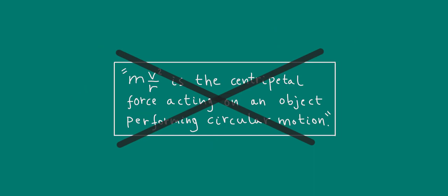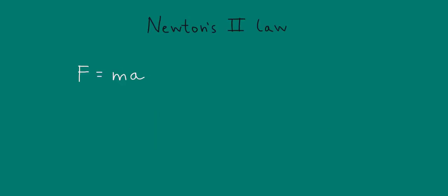Now what about mv squared over r? Why isn't it the centripetal force? As is often the case in A-level physics, let's take Newton's second law as our starting point, F equals ma. Now F stands for resultant force, of course.